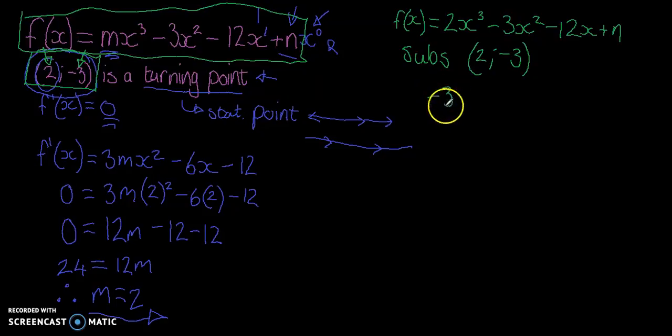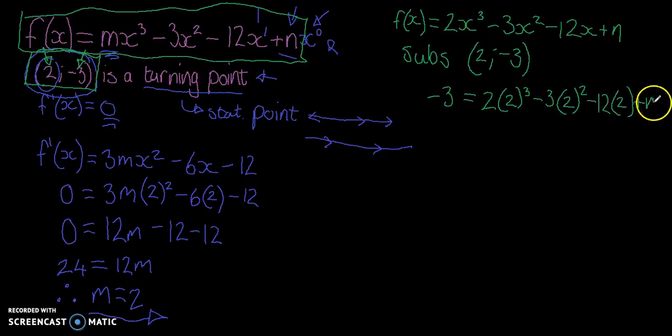So we're going to substitute that into f. So it'll be -3 = 2(2)³ - 3(2)² - 12(2) + n.